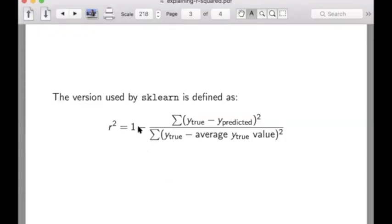In a bit more mathematical notation, you could write this as R-squared is 1 minus the sum of the true y-values minus the corresponding predicted y-values squared, all over the sum of the true y-values minus the average true y-value squared.